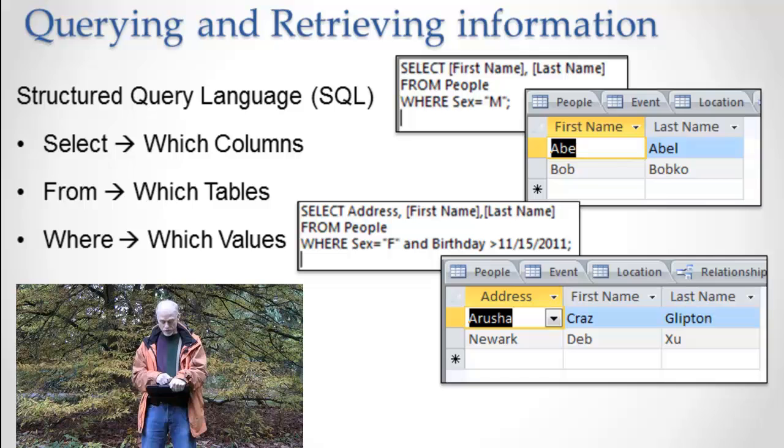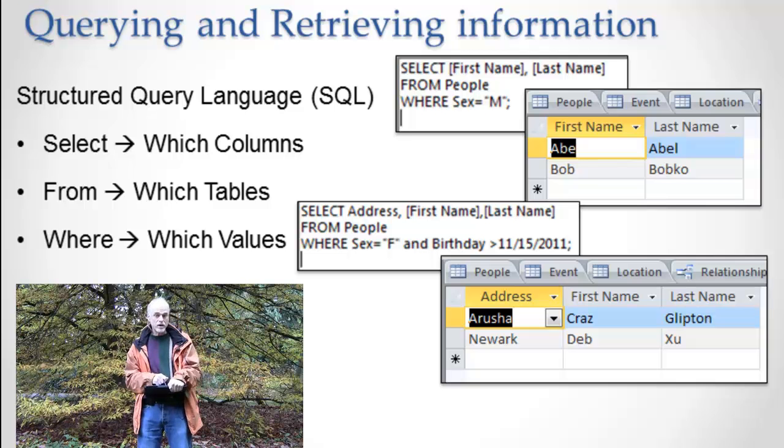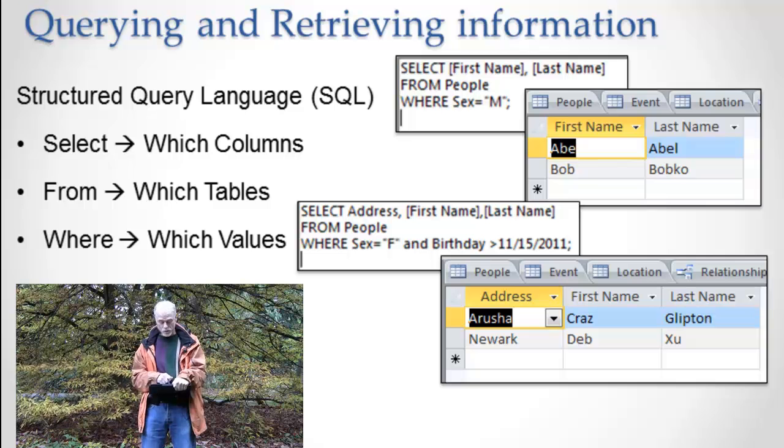Okay, so I say I want the address, first name and last name. There it is. Address, last name, first name from the people table. So I'm searching the people table. And where, which ones do I want? You know, there may be thousands of records, thousands of rows in the people table. Which ones do I want?